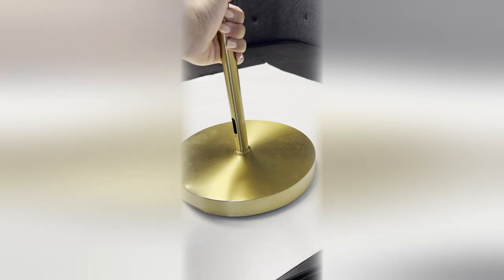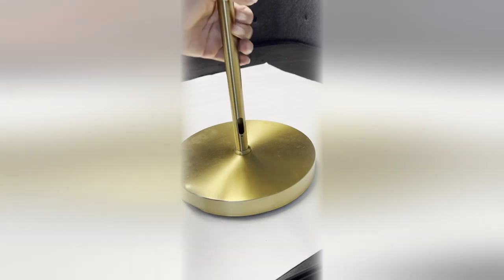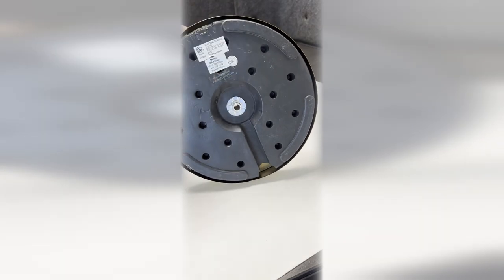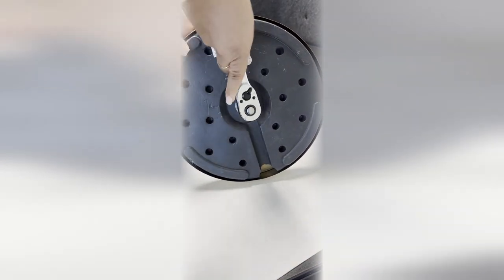If the lamp still turns, lay it down on its side and use a socket wrench or tool of your choice to tighten the bottom nut.